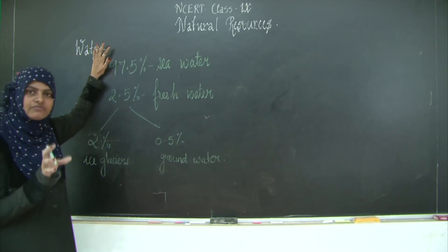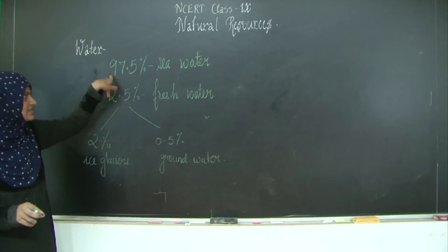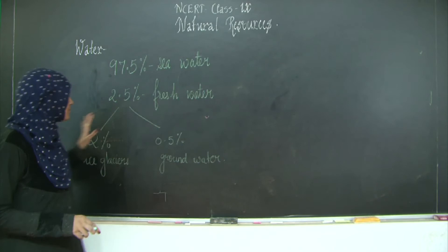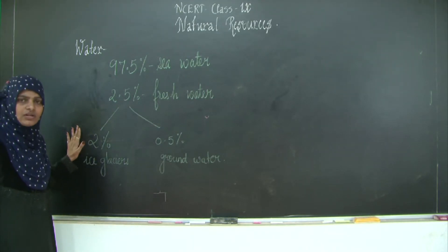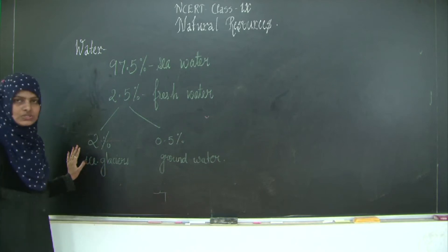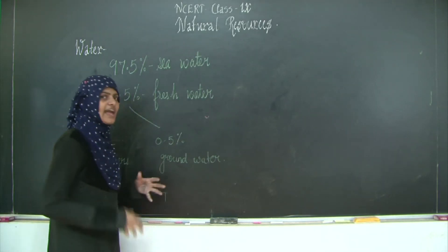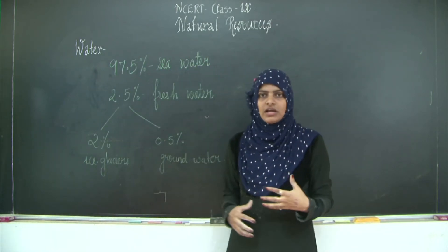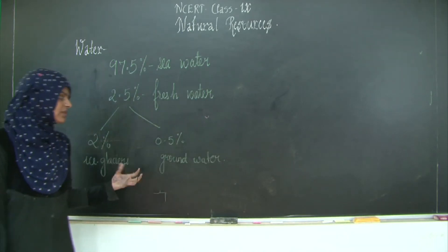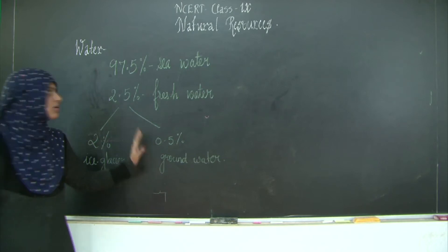So this 0.5% groundwater is the only water we can actually consume. Out of the whole 100% of water covering three-fourths of the earth's surface, 97.5% is seawater and 2.5% is fresh water. Of that fresh water, 2% is locked up in ice and glaciers, leaving only 0.5% as groundwater which we use for drinking, washing, and all activities. Even plants take up this same groundwater.